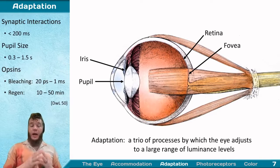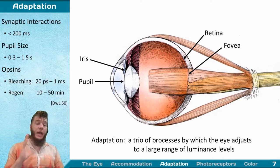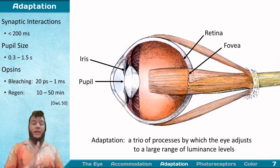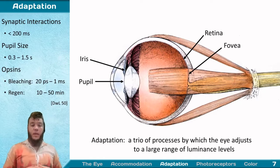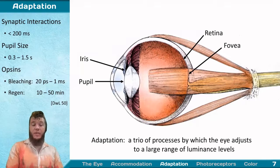Zeroing in on one major function: adaptation. There are several processes at play, but the basis is the same — these are processes by which the eye adjusts to a massive range of luminance levels. Direct sun can be as high as 30,000 lux, and yet your eye can adjust just fine. On an overcast day it's more like 1,000 lux, which is also typical for studio lighting such as a TV or news set.